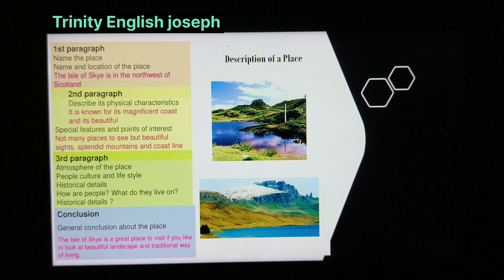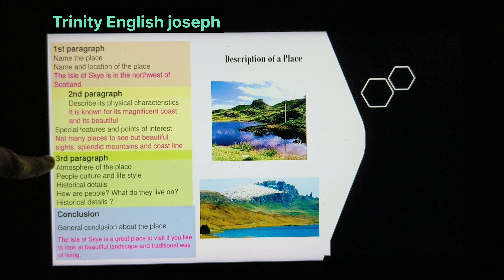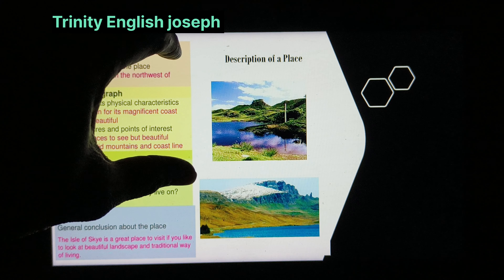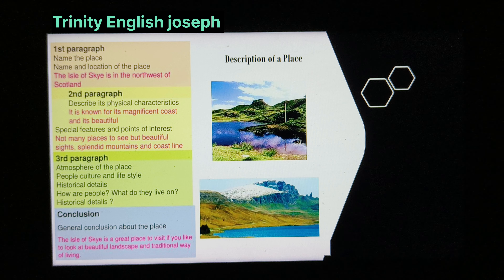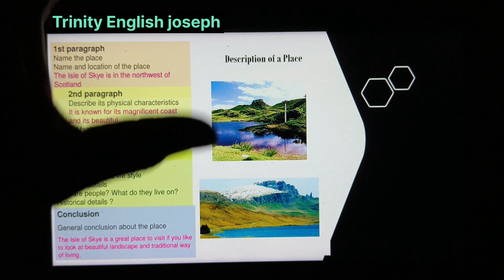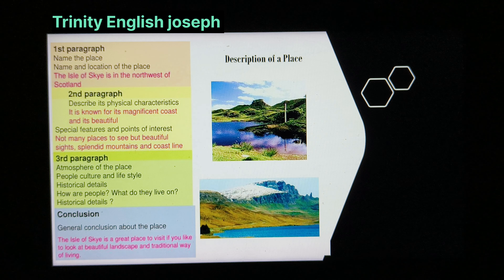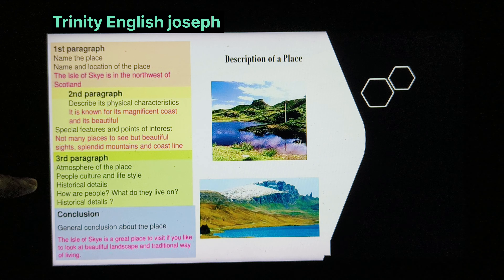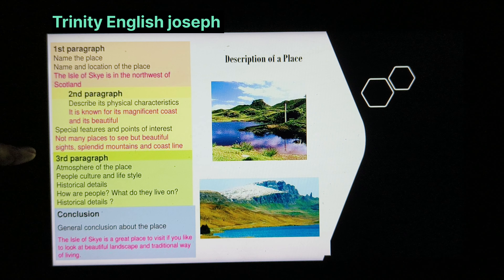Special features and points of interest — the main things to remember: not many places to see, but beautiful sights, splendid mountains and coastline. Keeping these pictures in mind, you have to describe it. Before you describe, you should have some picture in your mind — you should visualize the place before you describe it. You should try to keep that place in mind and then plan how you are supposed to describe it.